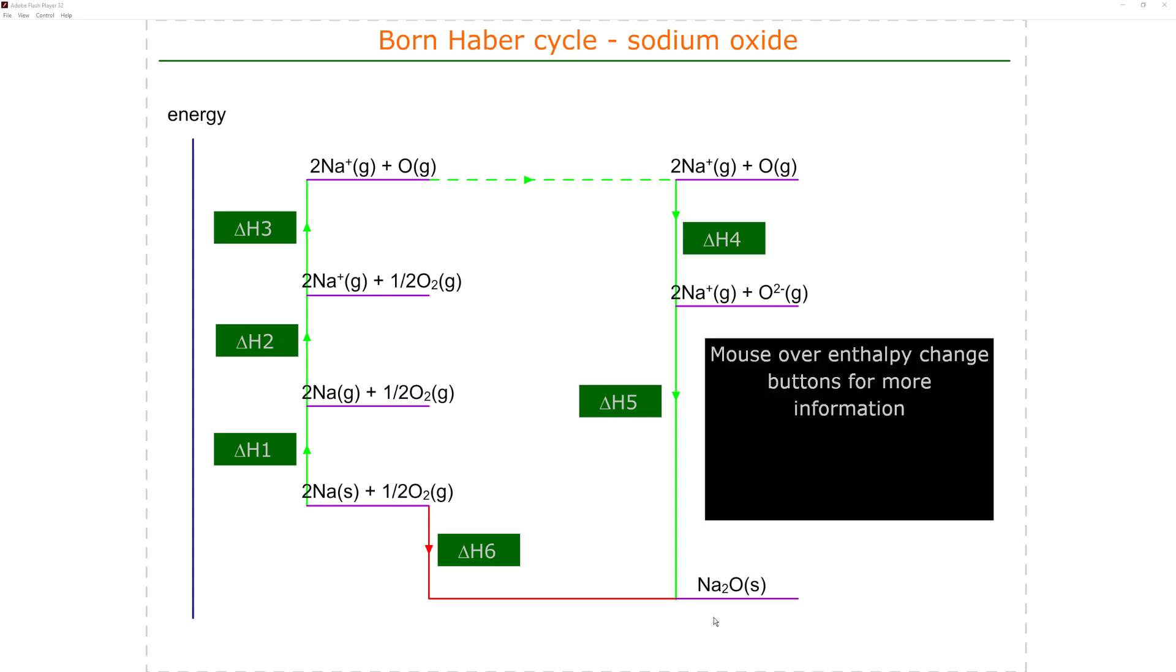The formula of sodium oxide is Na2O, so we need two sodium atoms for every one oxygen atom. In the lattice, these are ions - it's a giant ionic lattice. The Born-Haber cycle shows us an alternative way of getting to sodium oxide starting with the elements sodium and oxygen.